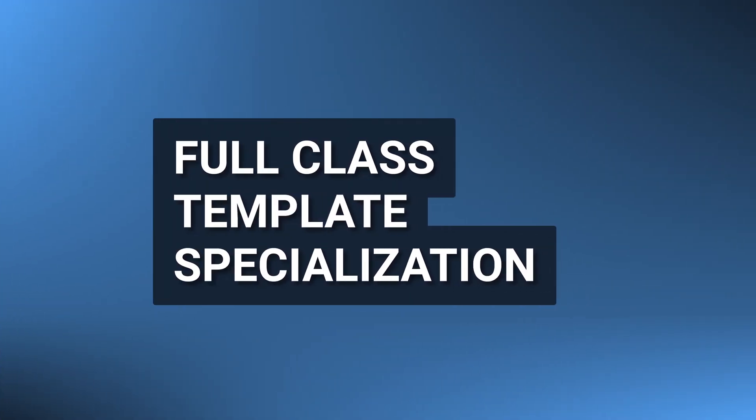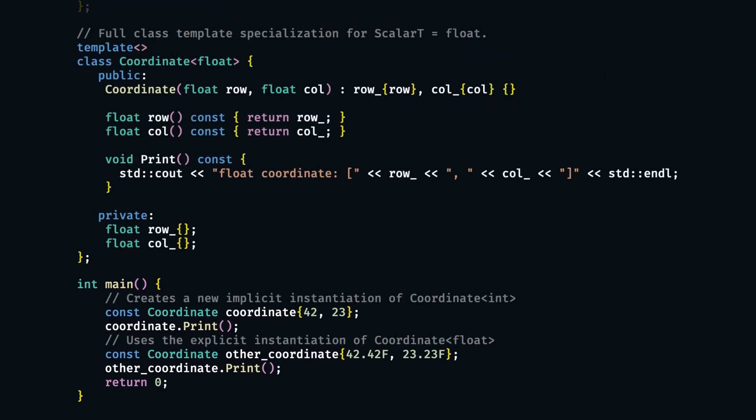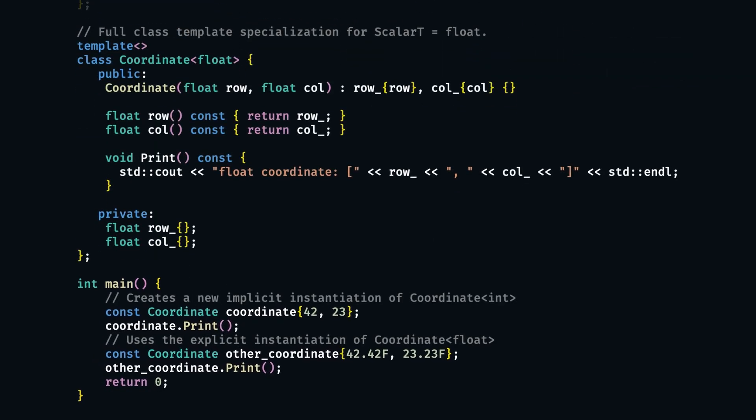This is called explicit template specialization, and it can be full and partial. We already talked about full template specialization when we talked about function templates, because that's the only option we have with function templates — even though we should overload functions instead of specializing them. Well, turns out we can use the same full template specializations with classes too, and in that case it actually does have a valid use case. In order to fully specialize a class template, we have to basically fully re-implement a class for a concrete type, prefixing it with template with opening and closing brackets.